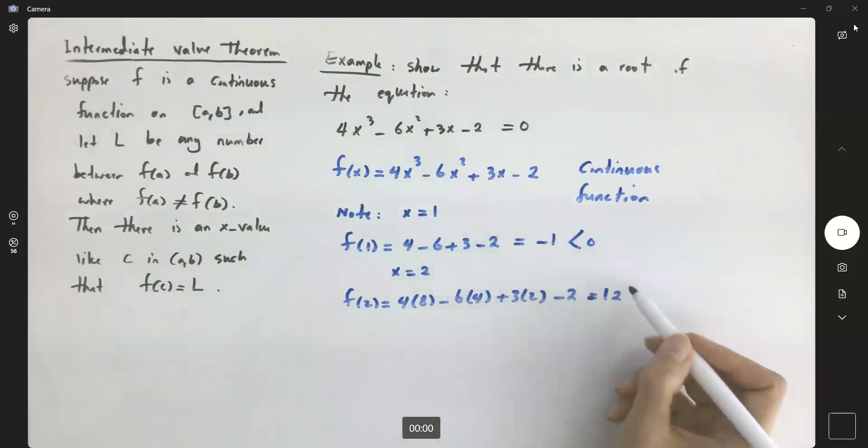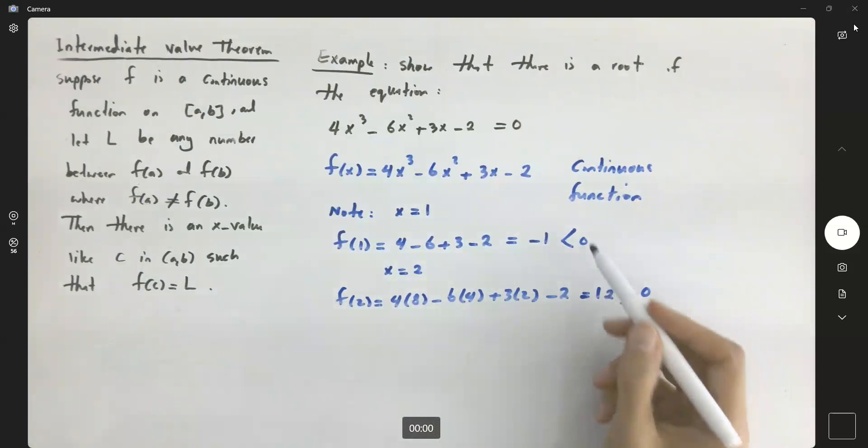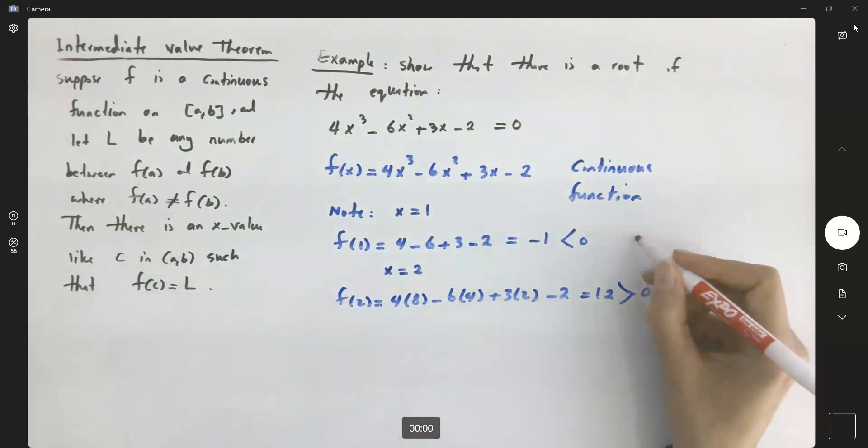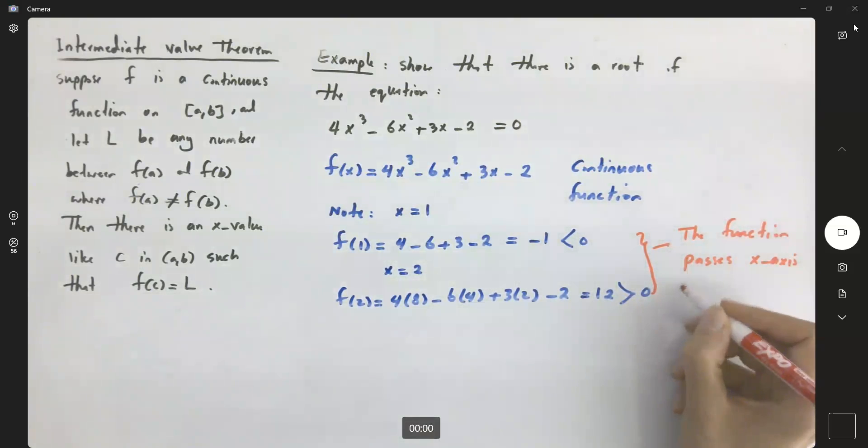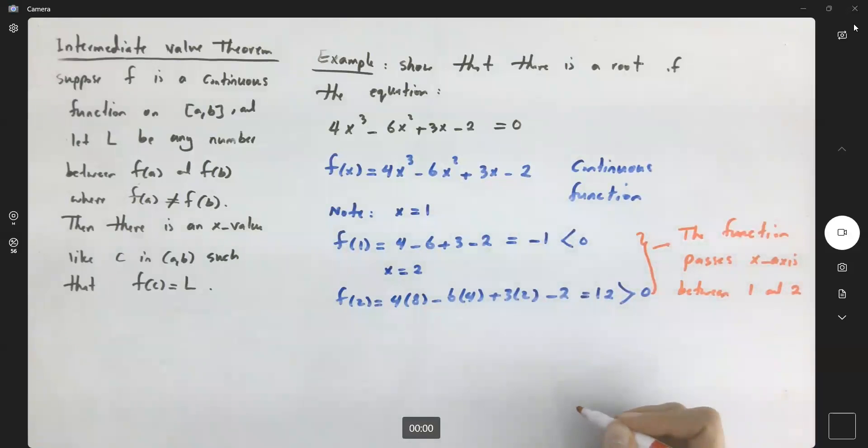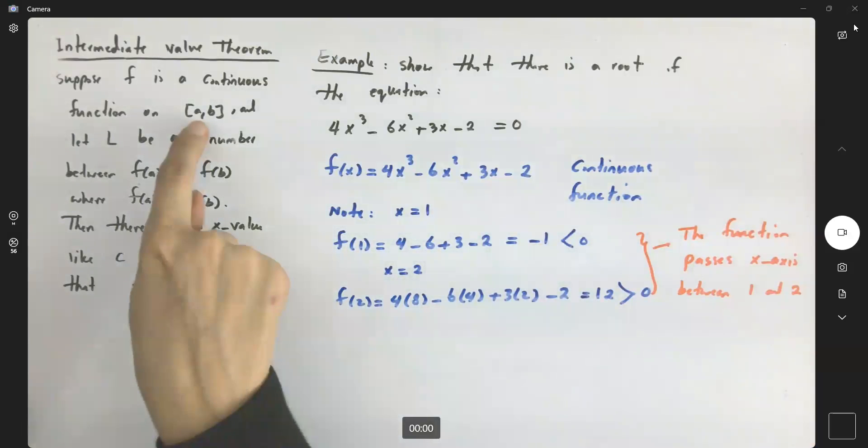So we have a negative y-value and a positive y-value. What's the meaning of that? These two y-values with different signs show that the function passes the x-axis between 1 and 2. So this is the observation that we have here. What's the meaning of that? It means that we can define this closed interval.